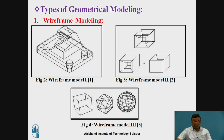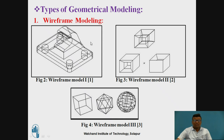Wireframe modeling consists of different edges and points — XYZ points and edges. It doesn't consist of any skin, surface, mass, or volume. So if you want to calculate these properties, you cannot calculate them in wireframe modeling. The only advantage is that you can save this file very easily with very less memory.